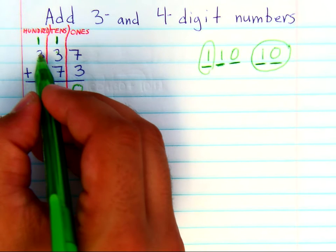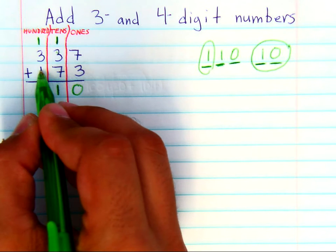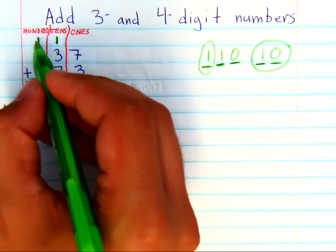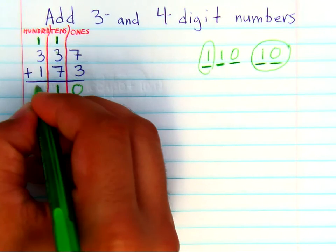So then you add the hundreds, three hundred and one hundred, which is four hundred. And you add another hundred, which is five hundred.